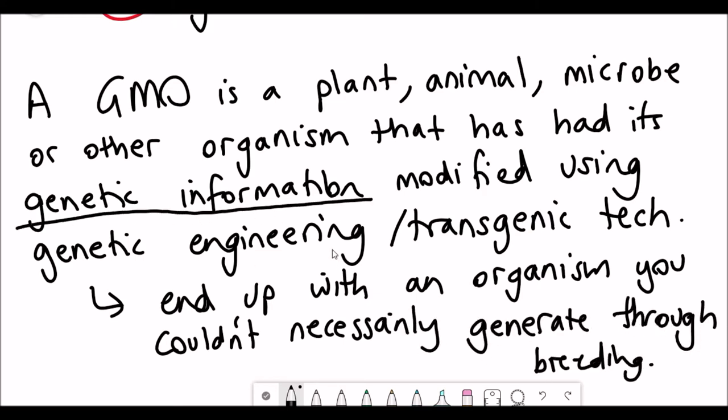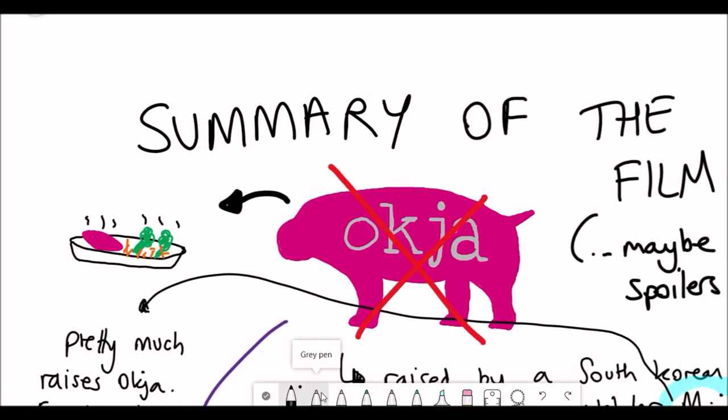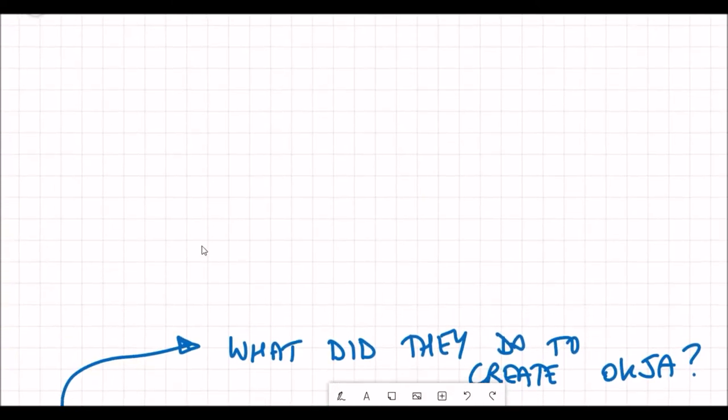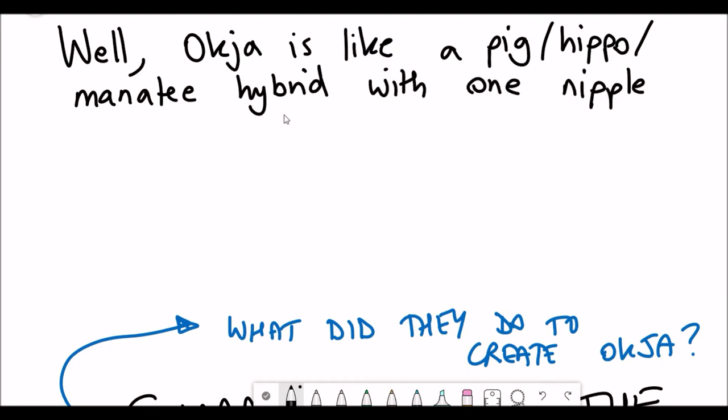What did they actually do then to generate a super pig such as Okja? In case you haven't seen the film, let's first try and describe what these super pigs actually look like. The super pigs kind of look like half pigs, half hippos, half manatees. They're pretty big and they're currently all females, and they have one nipple and these ginormous eyes.